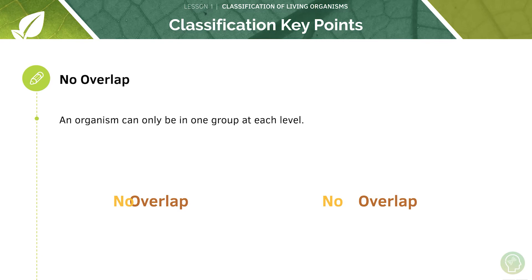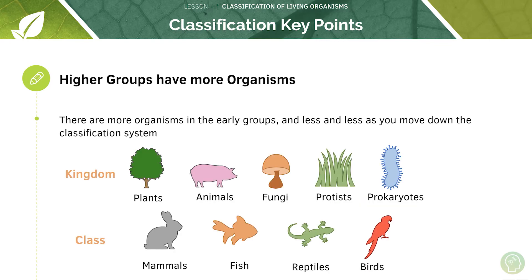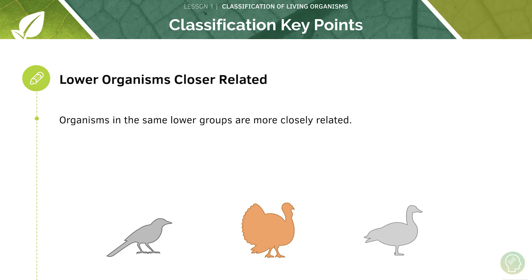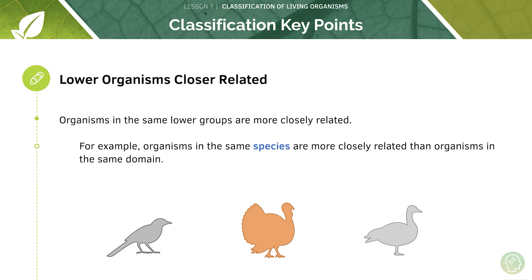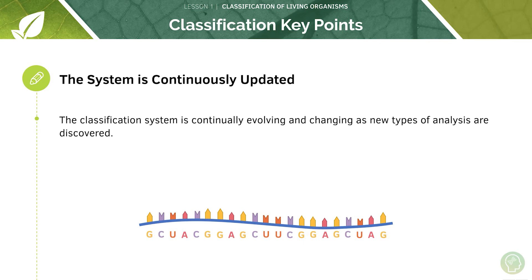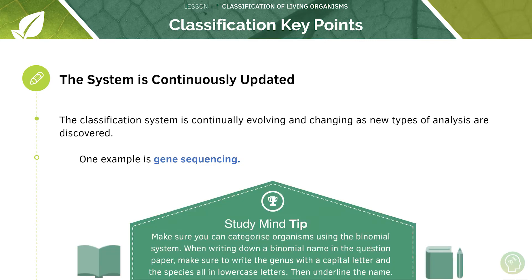Note that there is no overlap — no organism can be in more than one group at each level. There are more organisms in the early, broader groups and fewer as you move down the classification system — it starts broad and narrows down. Organisms in the same lower groups are more closely related; for example, organisms in the same species are more closely related than organisms in the same domain. Make sure you understand how to write the binomial name: the genus is written with a capital letter and the species in lowercase — for example, Homo sapiens, where Homo has a capital and sapiens is lowercase, and the name is underlined.